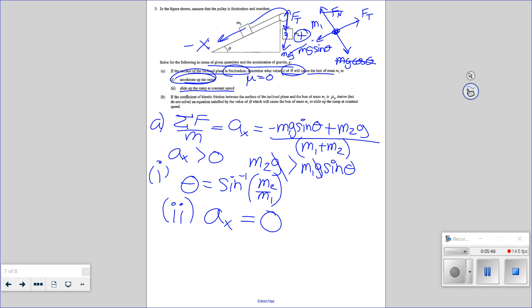Okay, low risk. You can do corrections. Okay, that just means these guys have to be equal so they cancel out. M2G equals M1G sine theta. We're going to slide up the ramp at constant speed. So that means,